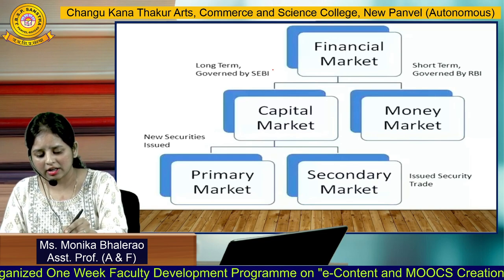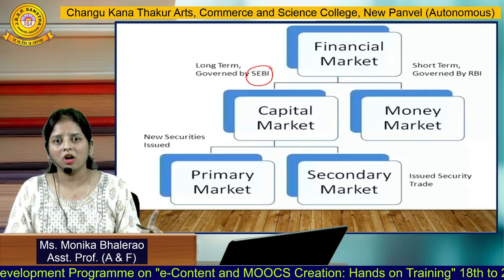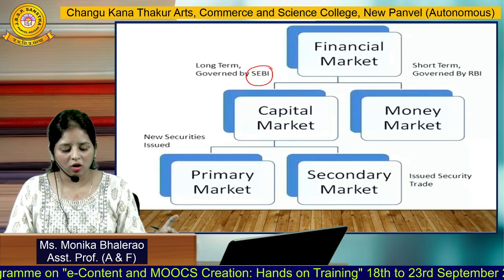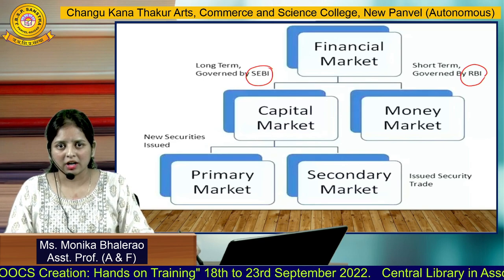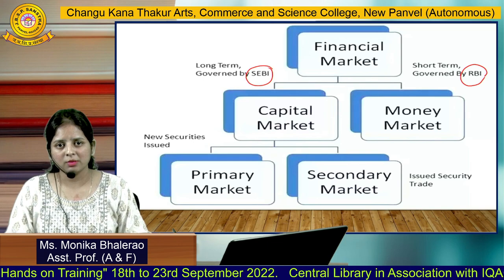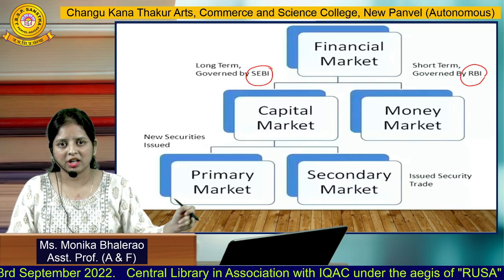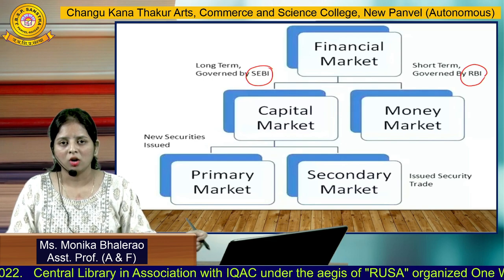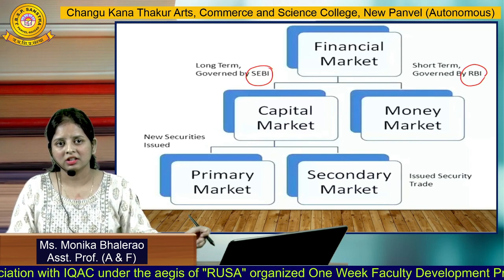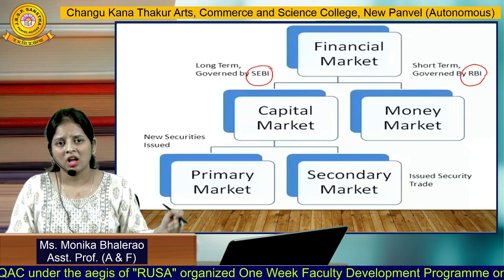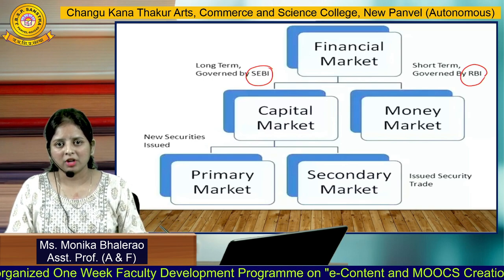The capital market is regulated by SEBI — the Securities Exchange Board of India — and the money market is regulated by RBI — the Reserve Bank of India. Capital market refers to long-term market instruments, meaning the securities and shares traded under the capital market are for the long term, which means they can be traded for more than one year. Money market instruments are traded for the short term — less than one year.